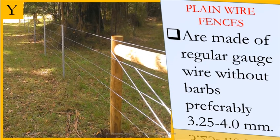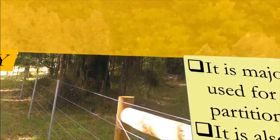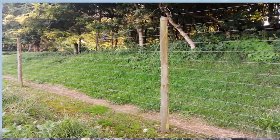The next wire fence is the plain wire fence. It is made of regular gauge wire without barbs, preferably 3.25 to 4 millimeters. This fence is majorly used for partitioning of paddocks. It is very suitable for sheep rearing as it does not destroy the quality of fleece.